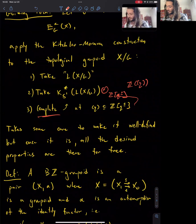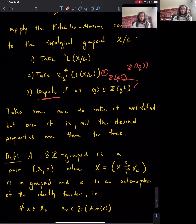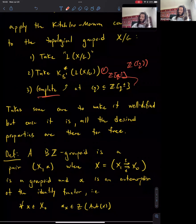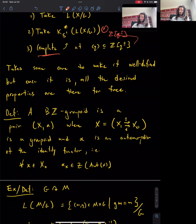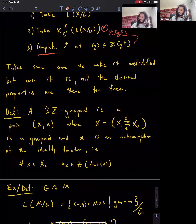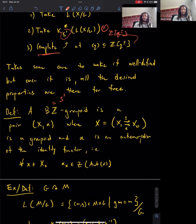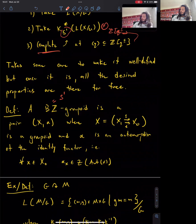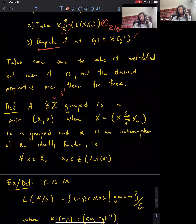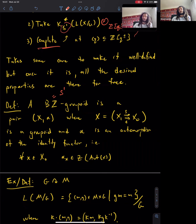Let me implement this construction. Part one takes a little care: what do we mean by the free loop space of a quotient groupoid? I need to define what I mean by a BZ-groupoid. BZ is homotopy equivalent to S1, but when working with groupoids, I want this homotopy-equivalent thing BZ rather than the strict topological group S1. All groupoids in this talk will be topological groupoids with continuous structure maps. A BZ-groupoid is a topological groupoid together with an alpha—an automorphism of the identity functor, meaning a continuous central automorphism of every object.